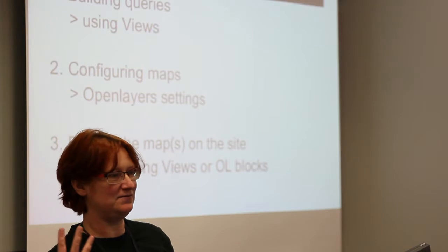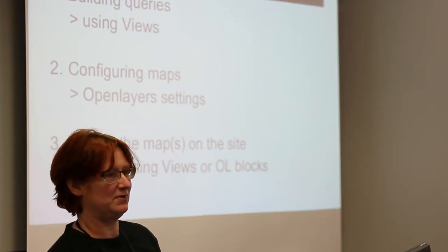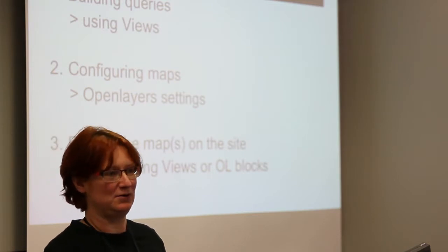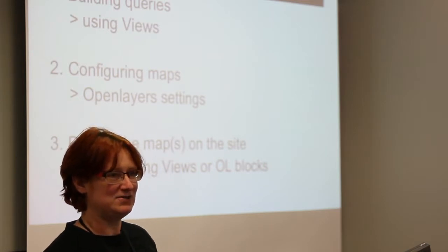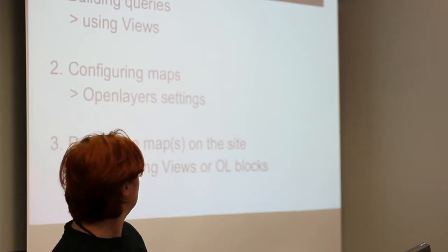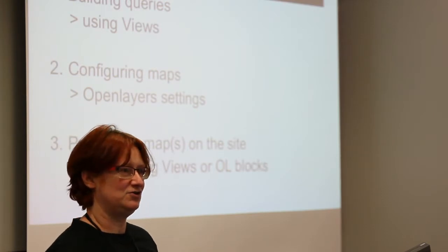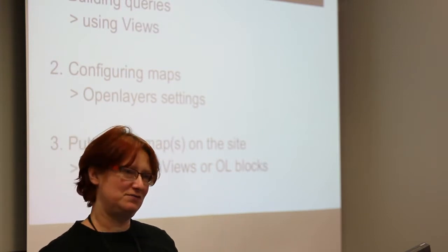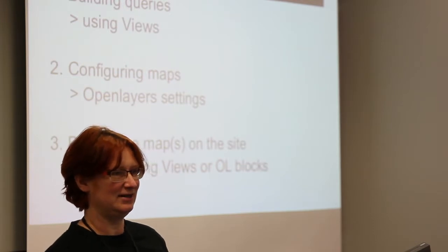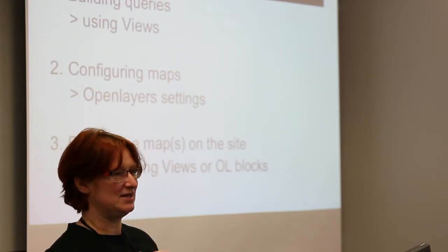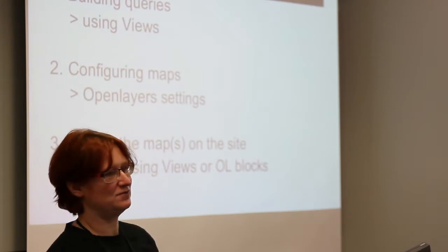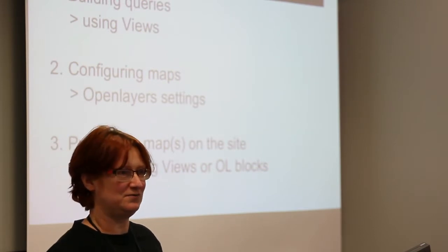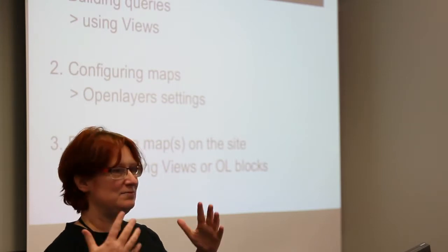What does the OpenLayers module do? It's basically three different steps. First, it's building a query in Views to say what should be on the map — like what places should be shown. Then you have a step where you're configuring the individual map, like what should be the background and where should it be focused. And then you go back to Views and actually put it on the site. It takes advantage of the fact that Views is split between doing queries and putting results on the website.